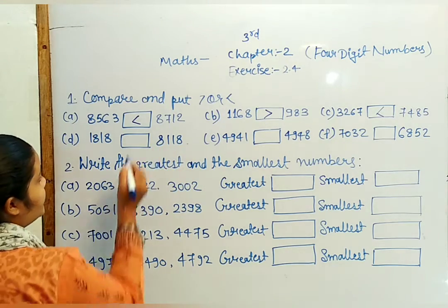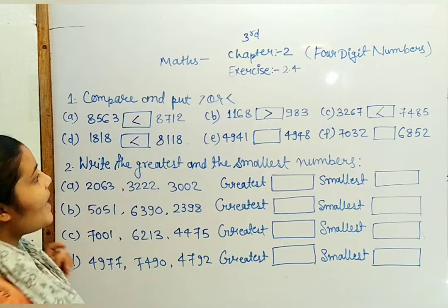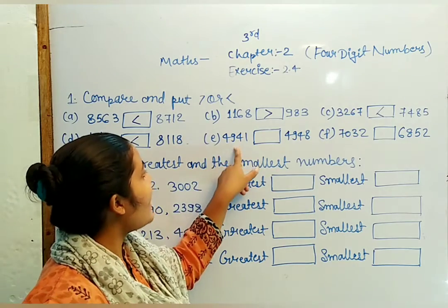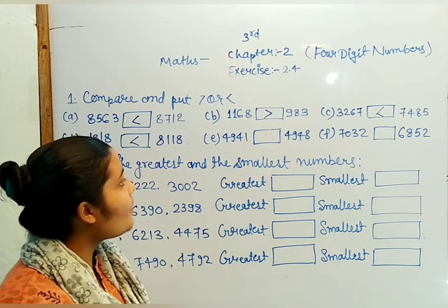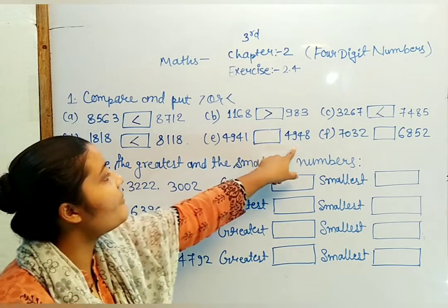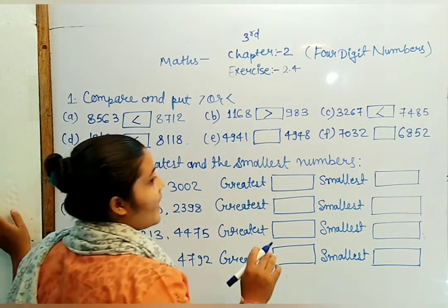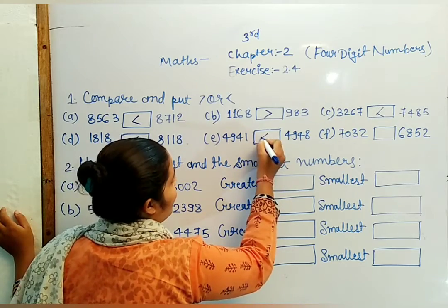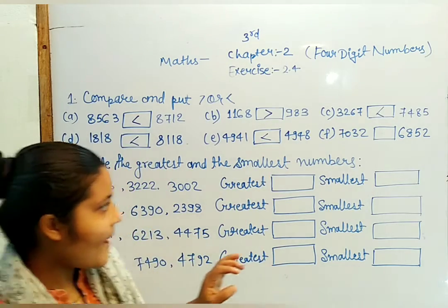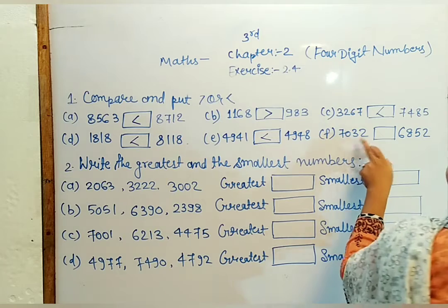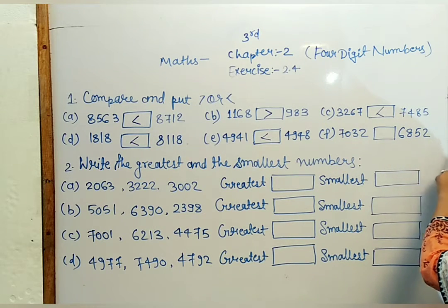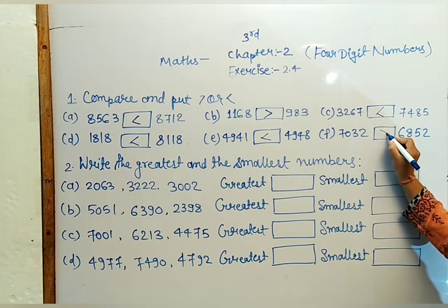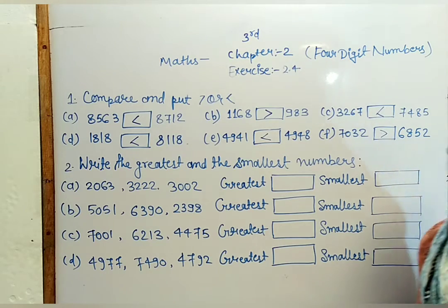Here we go, 4,941 and 4,948. So 4,941 is less than 4,948. Here we go, 7,632 and 6,852. Now you can apply these symbols, okay?